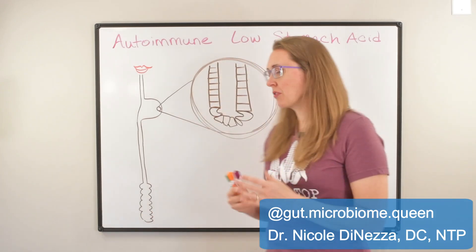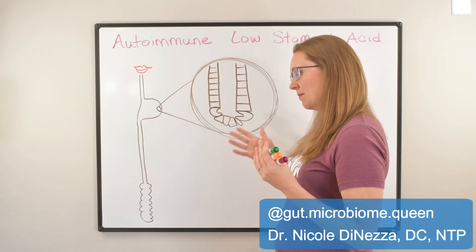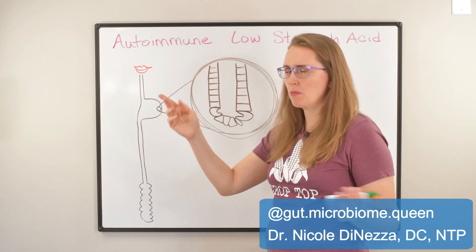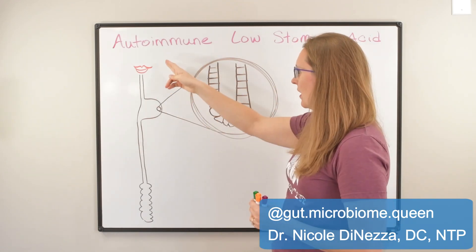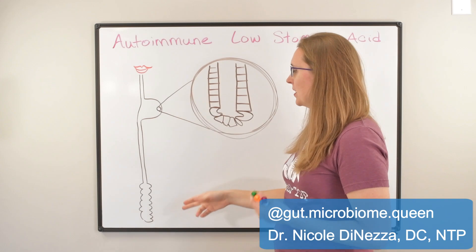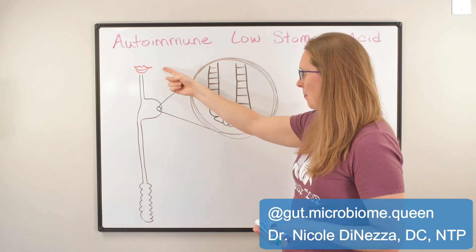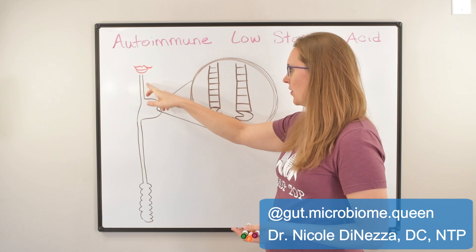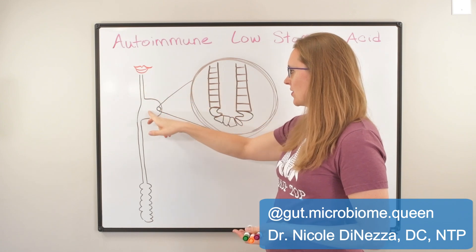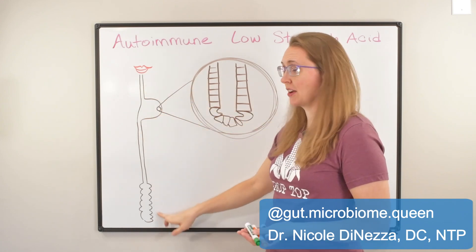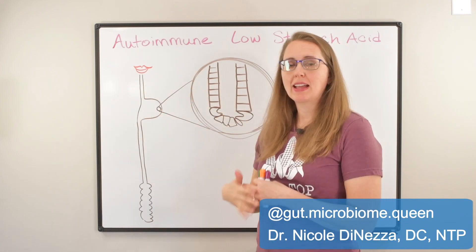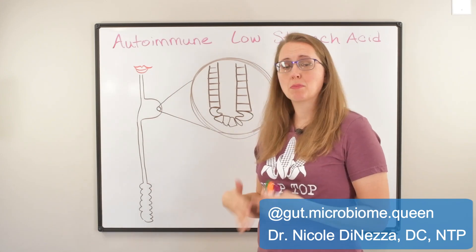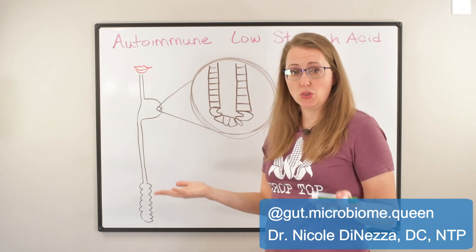I have drawn my infamously horrendous, but still hopefully helpful, depiction of the human digestive system from mouth to anus. We've got the mouth, esophagus, stomach, small intestine, and colon — and this is where your food and your critters are going to traverse before they get into your poop.